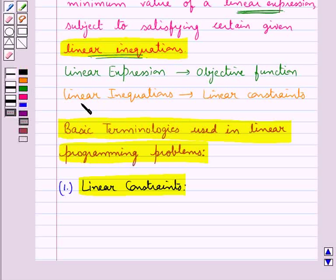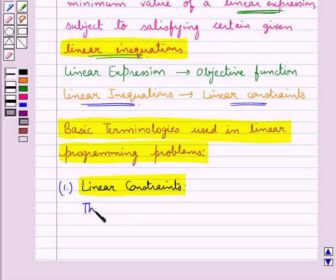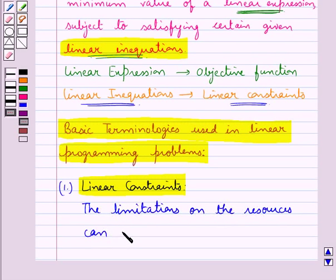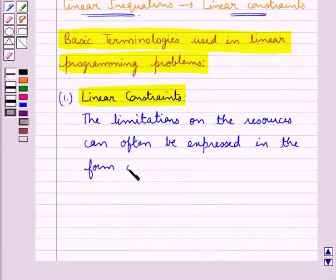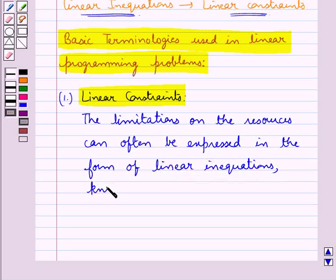The linear inequalities are the linear constraints. The limited resources like money, labour, time, materials, etc., available in the business or industry are to be best utilized, and the limitations on the resources can often be expressed in the form of linear inequalities, which are known as linear constraints.